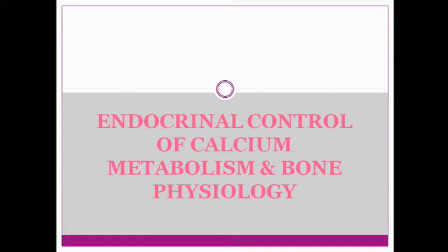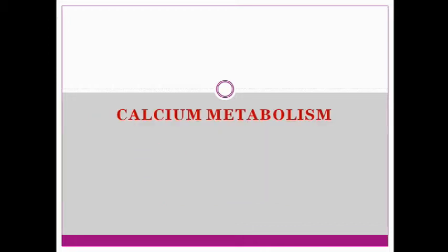It comprises three hormones. First one is parathormone or PTH, next is the active form of vitamin D3, and these three hormones regulate your plasma calcium, phosphorus, magnesium and metabolism of bone — that is your bone physiology. Today we will study about the metabolism of calcium, phosphorus and magnesium and bone physiology.